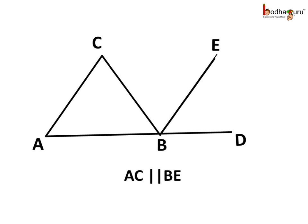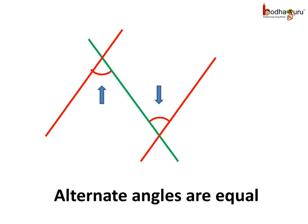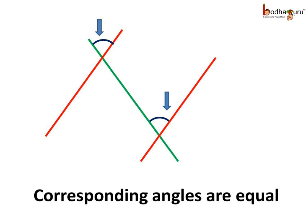We can prove this another way. Let us draw a line at B which is parallel to AC. Now AC is parallel to BE. When two parallel lines are intersected by a transversal, the alternate angles are equal. Similarly, this is another pair of alternate angles, hence they are equal. We also know the pair of corresponding angles are also equal when two parallel lines are intersected by a transversal. This is another pair of corresponding angles and hence they are equal.